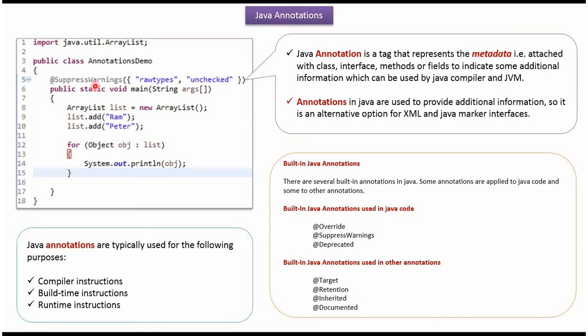A Java annotation is a tag that represents metadata. Annotations can be attached with class, interface, methods, and fields. Annotations indicate some additional information that can be used by the Java compiler and JVM. Annotations in Java are used to provide additional information, so it is an alternative option for XML and Java marker interfaces.